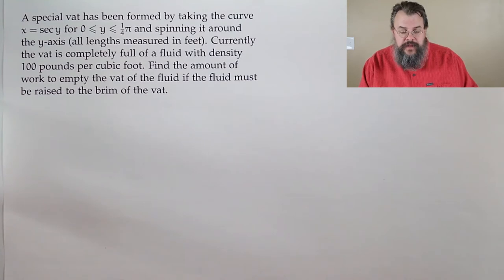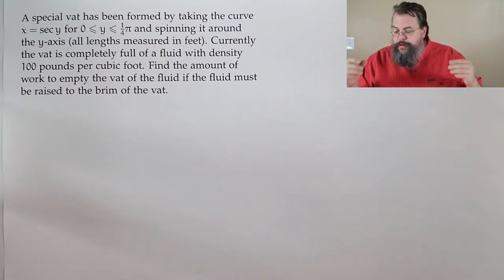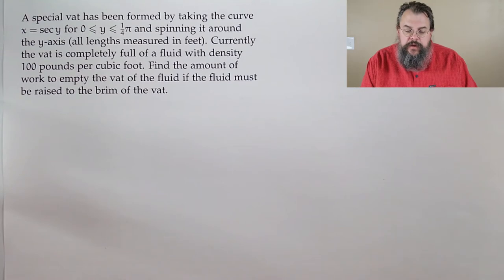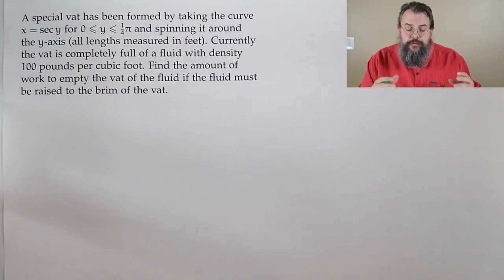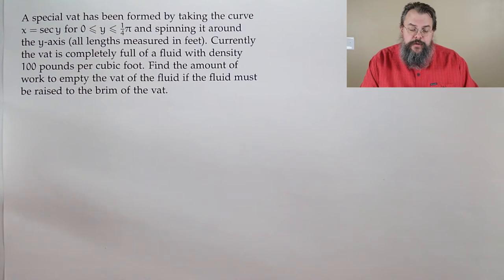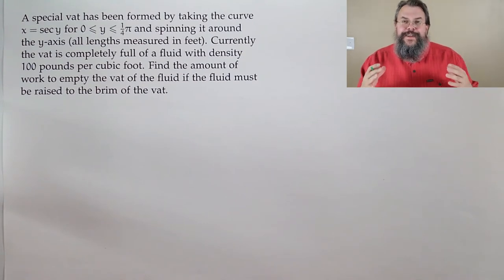Our next problem. A special vat has been formed by taking the curve x equals secant y, for zero ≤ y ≤ π/4, and spinning it around the y-axis. All lengths are measured in feet. The vat is completely full of a fluid with density 100 pounds per cubic foot.